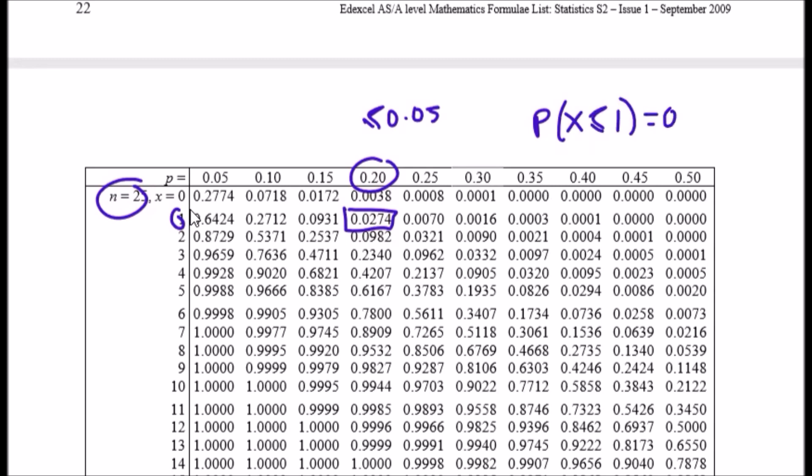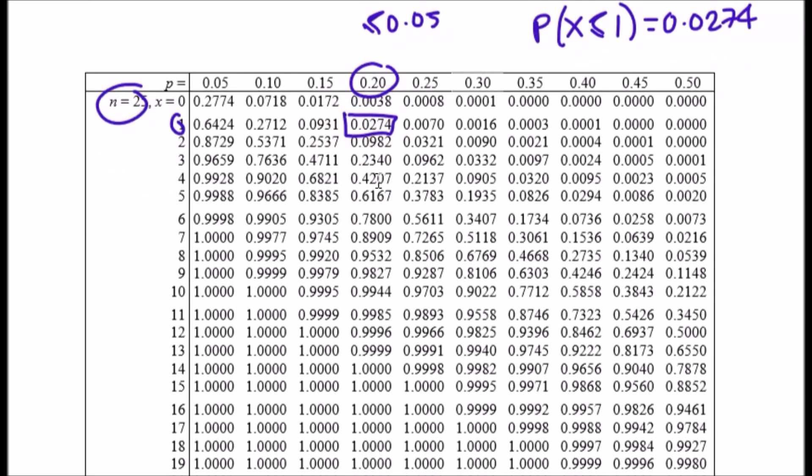For the upper tail, going up to 95%, we find the tabulated value is 8. So it would be probability x is less than or equal to 8, which is 0.9532.